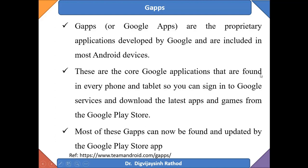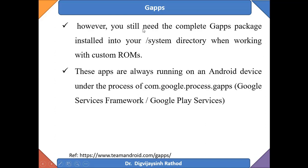GApps are the core Google applications found in every phone and tablet, allowing you to sign into Google services and download the latest applications from the Google Play Store. However, if you create an emulator using Android Studio, GenyMotion, or another tool, you don't have the Google Play Store. Most of these GApps are found and updated by the Google Play Store application, but you still need the complete GApps package installed in your system directory when working with a custom ROM.